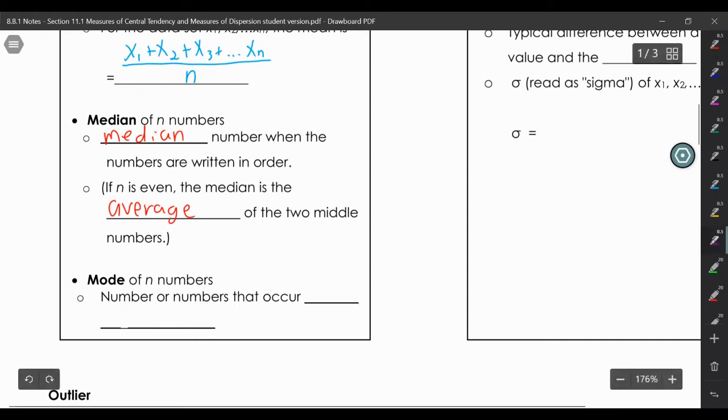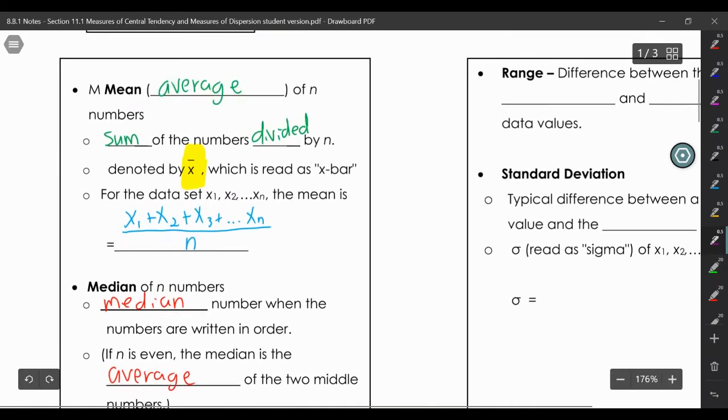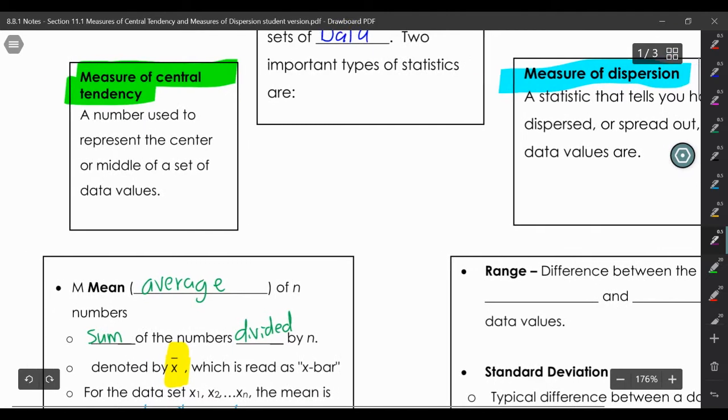And mode is the number that occurs the most. Mode, most, that's the way I remember it. We have three M's: mean, median, mode. Mode and most. Median that middle number, like when you're driving on the road. And then the mean must be the average.